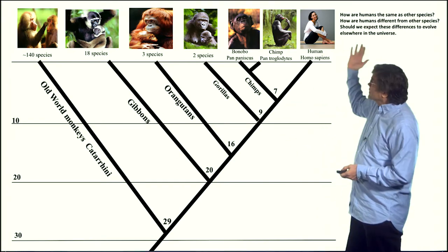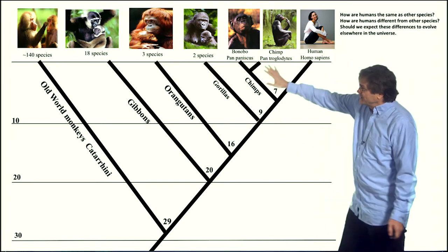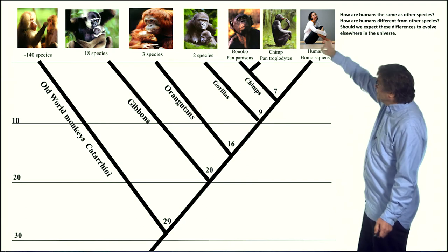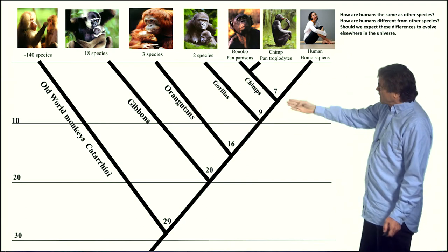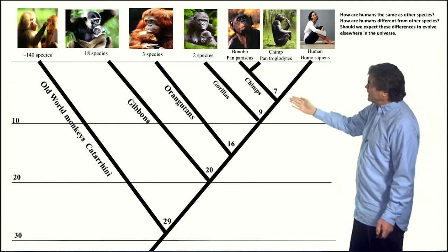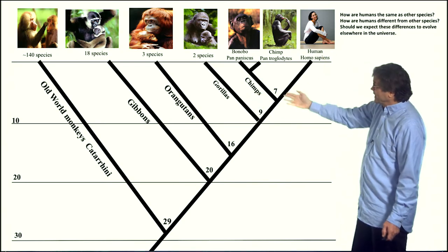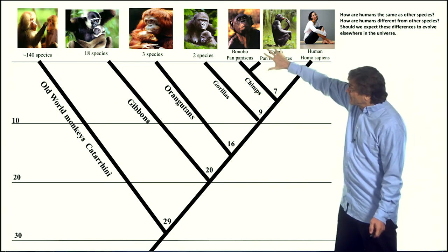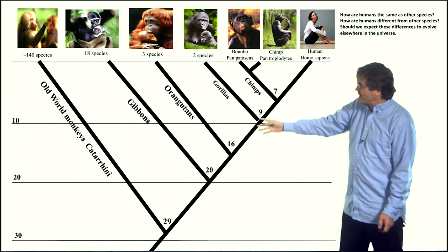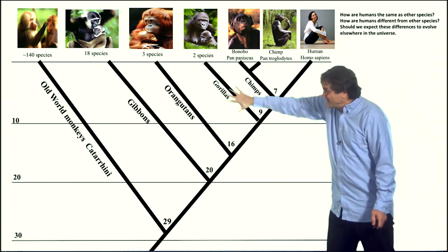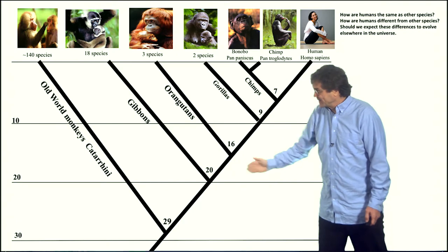So here we have some of our cousins, our ape cousins and old world monkey cousins. Here are human beings and for example about six or seven million years ago we had a common ancestor with chimps, and we have a common ancestor with gorillas about nine million years ago, and with orangutans 16 million years ago.